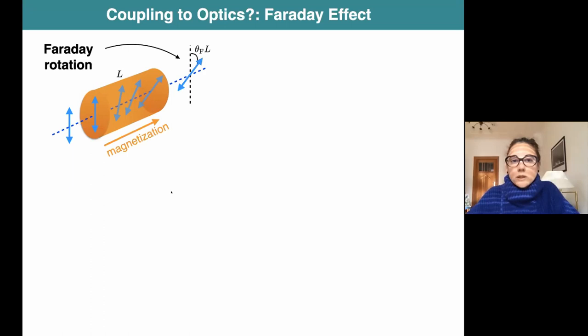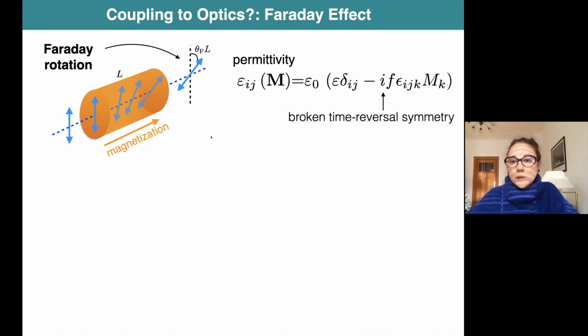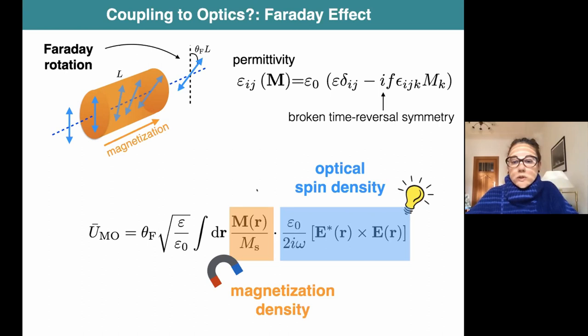If we want to think about how light interacts with magnetic matter, we can think in terms of the classical Faraday effect, where light goes through a magnetized material and rotates its plane of polarization. The amount it rotates is proportional to the Faraday rotation constant. This can be encapsulated in the permittivity of the material, which acquires a correction that is linear in the magnetization of the material, anti-symmetric and imaginary. This F is basically proportional to the Faraday rotation. We can introduce this permittivity in the electromagnetic energy of the system and obtain a correction coupling the magnetization density with the optical spin density.